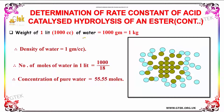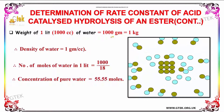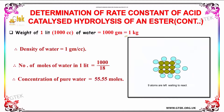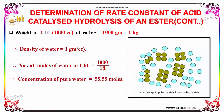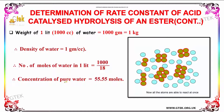The weight of 1 liter of water is 1000 grams, equal to 1 kilogram, and the density of water is 1 gram per cc. The number of moles of water in 1 liter is equal to 1000 divided by 18. So the concentration of pure water is 55.55 moles.